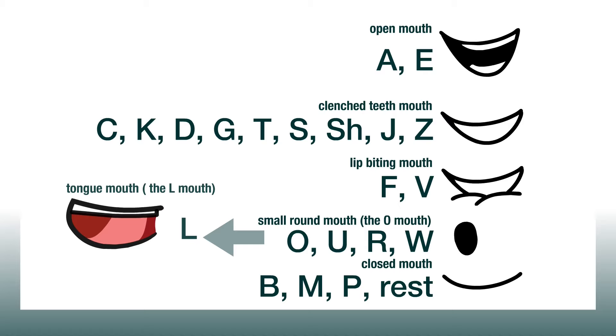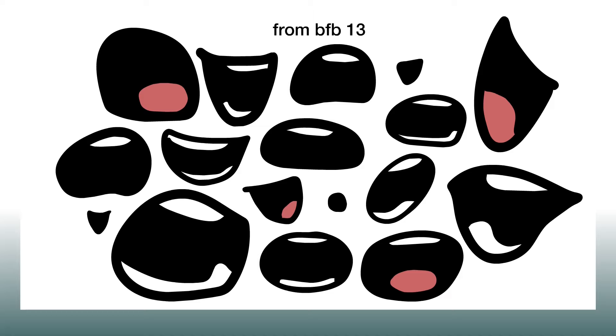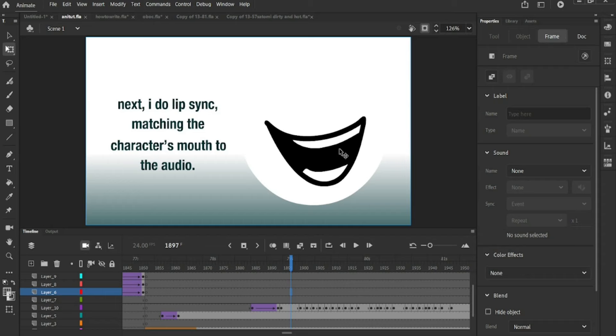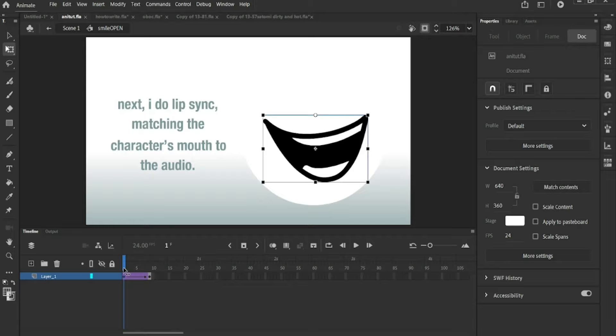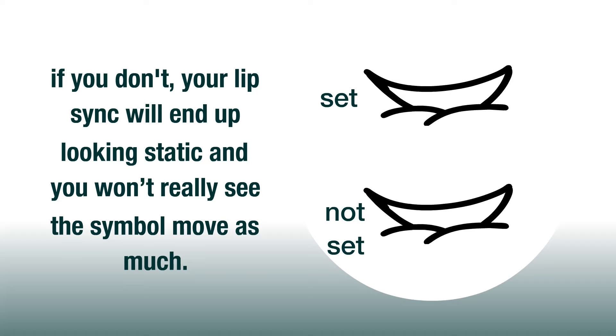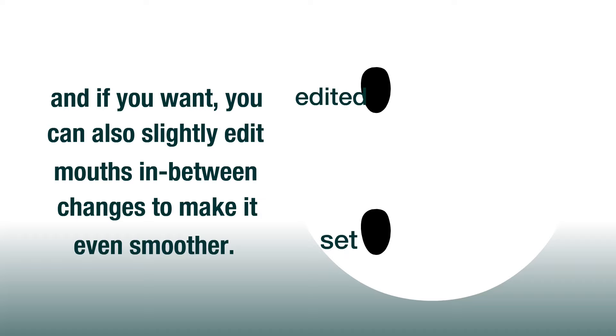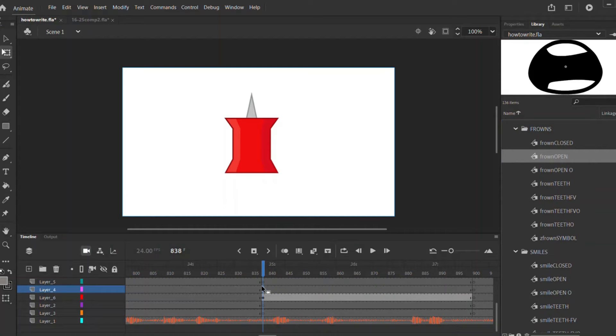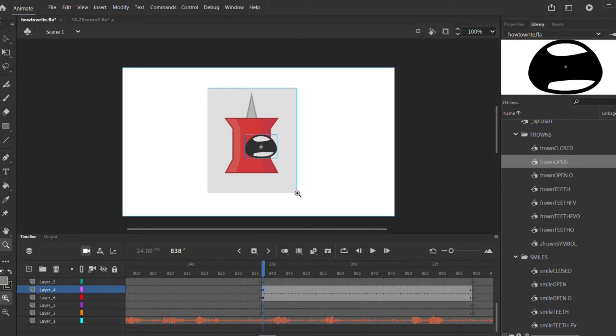In BFB especially, there are many different versions of mouths to fit different emotions, but to keep things simple, we only need one happy and one sad or neutral. If your mouths are graphic symbols, a way to make lip sync smooth is to tween the mouths in their respective symbols so they transition well into each other. Make sure to set it to play once from frame 1. If you don't, your lip sync will end up looking static and you won't really see the symbol move as much. And if you want, you can also slightly edit mouths in between changes to make it even smoother.